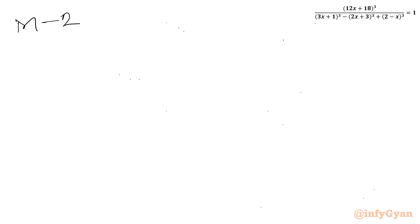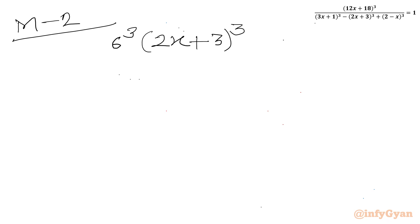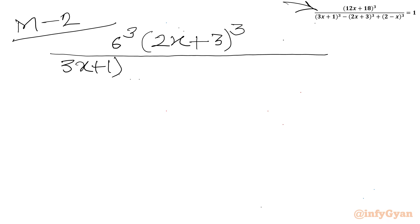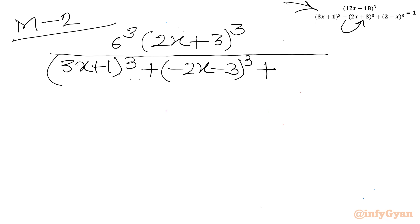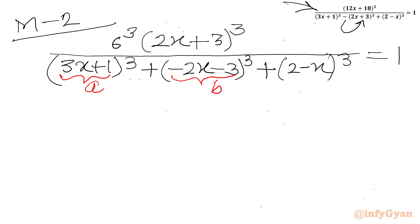Now we will solve by method number 2. Let me write our equation. I will take 6 common so we can write 6 cube times (2x+3) whole cube over the expression. Now if I consider the first denominator bracket equal to a, this bracket b, and this bracket c, let's calculate the value of a plus b plus c.